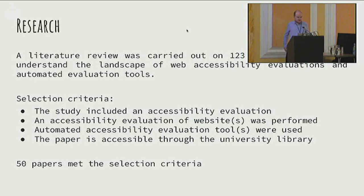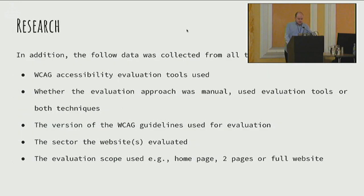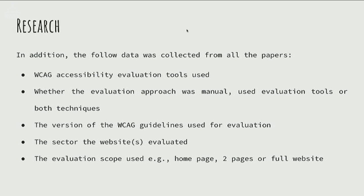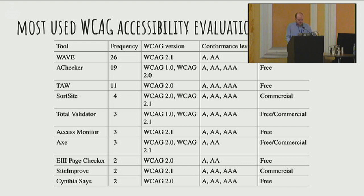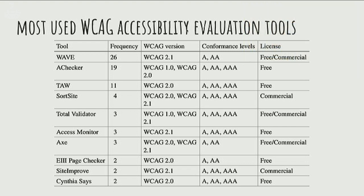50 papers met the criteria — some papers weren't accessible through my university library. I collected data on the tools being used, whether the approach was manual, automatic, or a combination, the version of the guidelines being used, the sector the website was in, and the evaluation scope — how many pages were evaluated, whether just the homepage or the full website. The most popular tools were WAVE, AChecker, TAW, and SortSite.